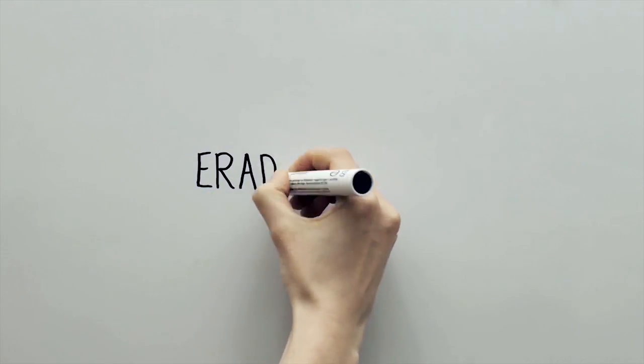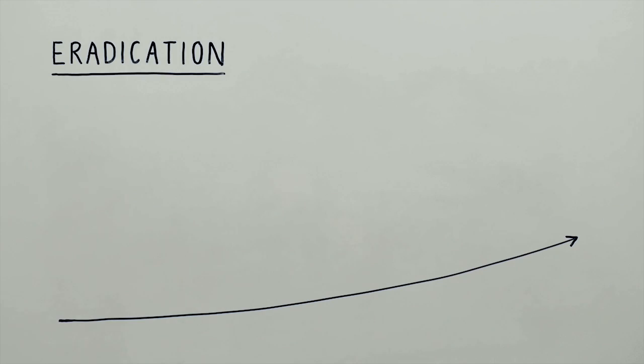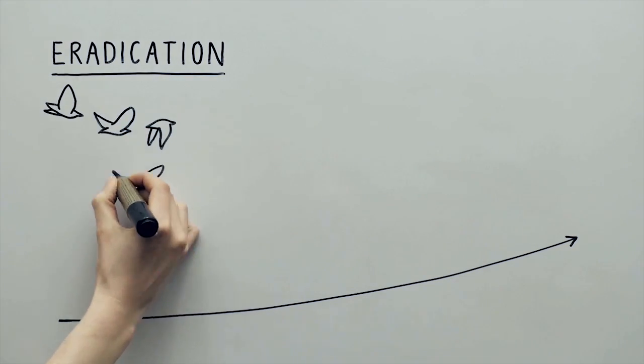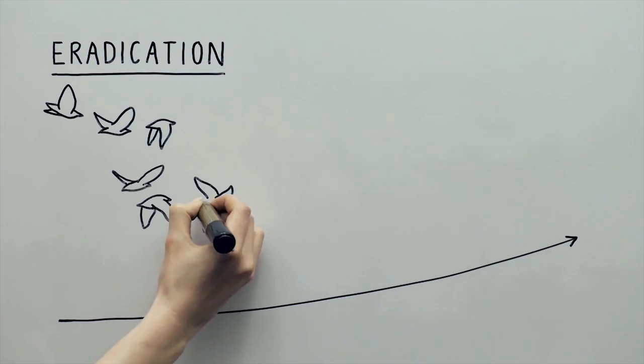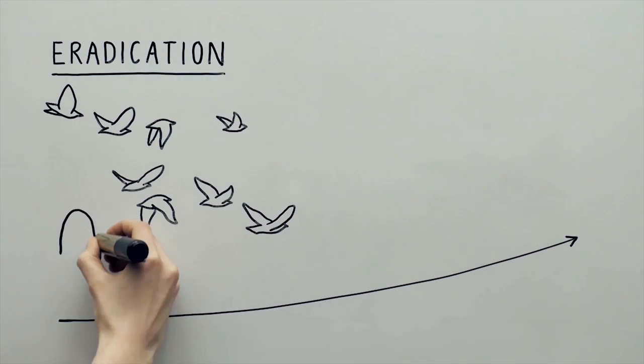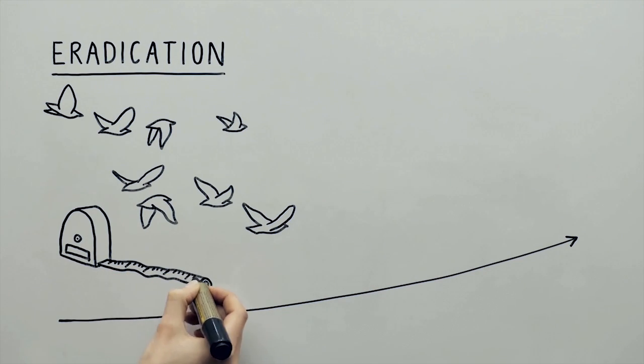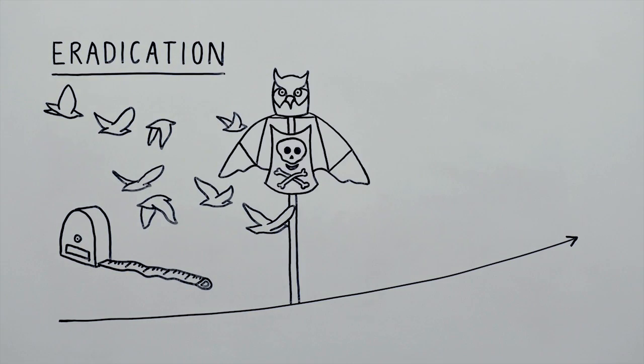Once an invasive species crosses our borders and we know where it is, our efforts are best aimed at stopping it from spreading further and eradicating it if we can. Eradication relies on both knowing how far an invasive species has spread and having appropriate tools to completely eliminate it.